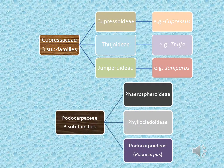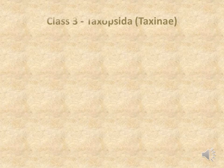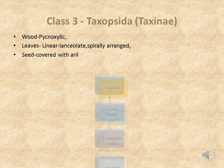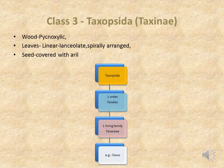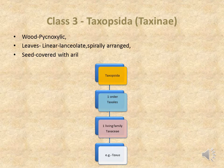Podocarpaceae family is also divided into 3 sub-families: Pherospheroideae, Phyllocladoideae, and Podocarpioideae. The example for Podocarpioideae is Podocarpus. The 3rd class is Taxopsida, also called Taxinae, which has pycnoxylic wood, linear lanceolate or spirally arranged leaves, and seeds covered with an aril. Taxopsida has one order, Taxales, with one living family, Taxaceae. The example is Taxus.